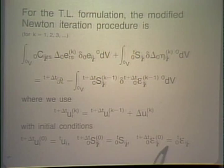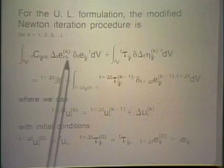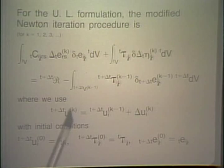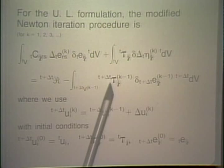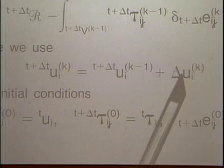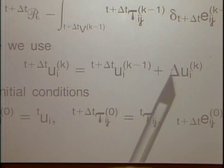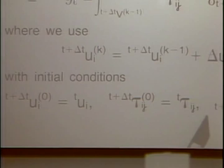A similar equation is used in the updated Lagrangian formulation. We iterate with iteration counter k on the left-hand side and k minus 1 on the right-hand side. The displacements are updated as shown, and initial conditions are given. All these terms were discussed in detail in earlier lectures.